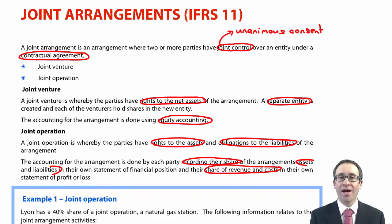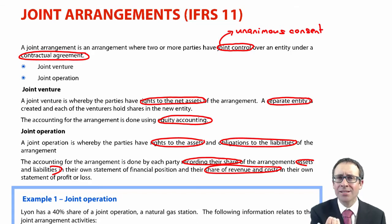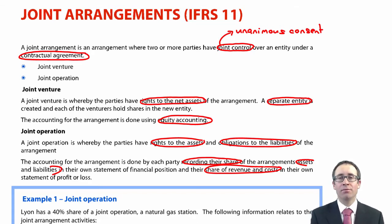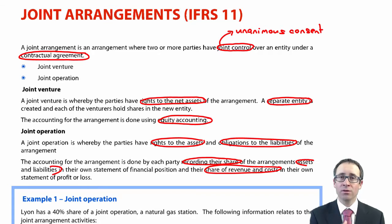So it's very different from equity accounting. For a joint operation, you simply record your assets and liabilities on your statement of financial position — what you own — and then your share of revenue and your share of costs in your statement of profit or loss. To summarize: a joint venture involves a separate legal entity accounted for using equity accounting; a joint operation has no separate entity and you account for your assets and liabilities on the SFP and your share of revenues and costs in profit or loss.